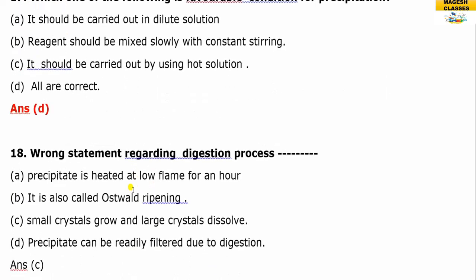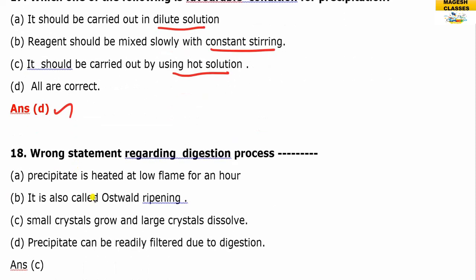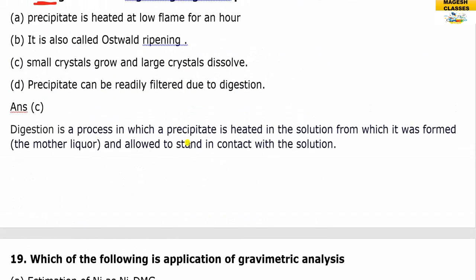Favorable conditions for precipitation include using a dilute solution with constant stirring, and carrying out the process using a hot solution. All of these are correct favorable conditions.